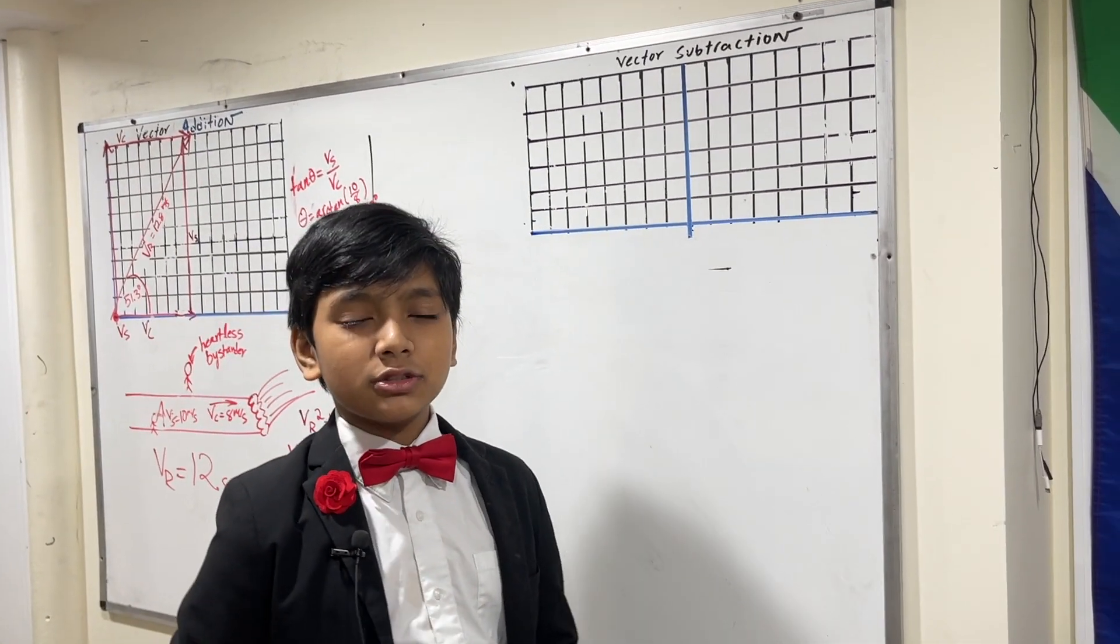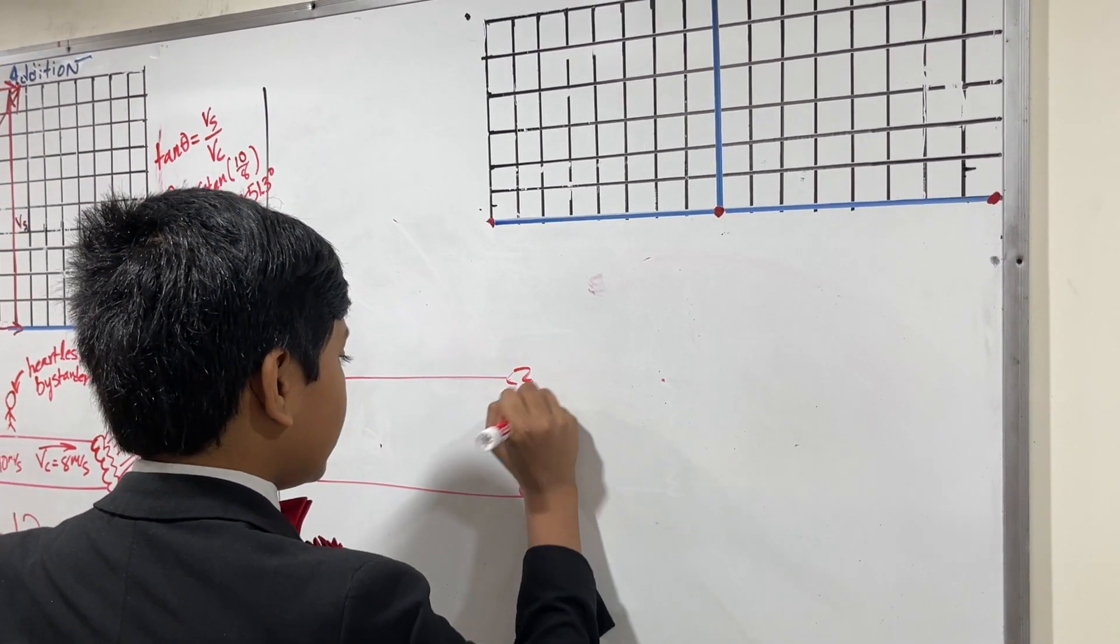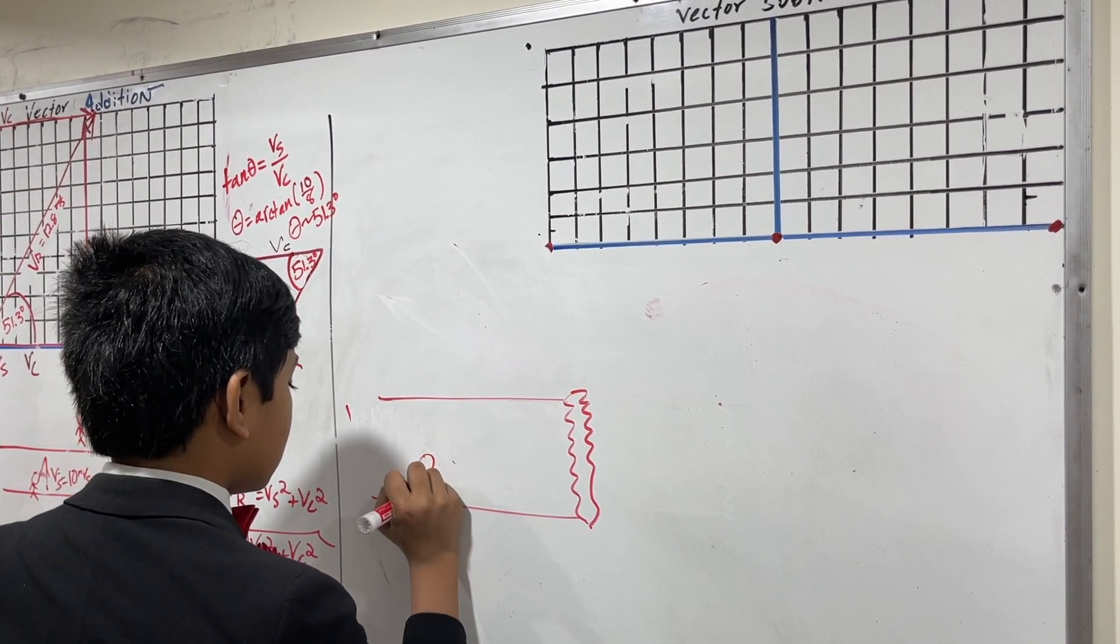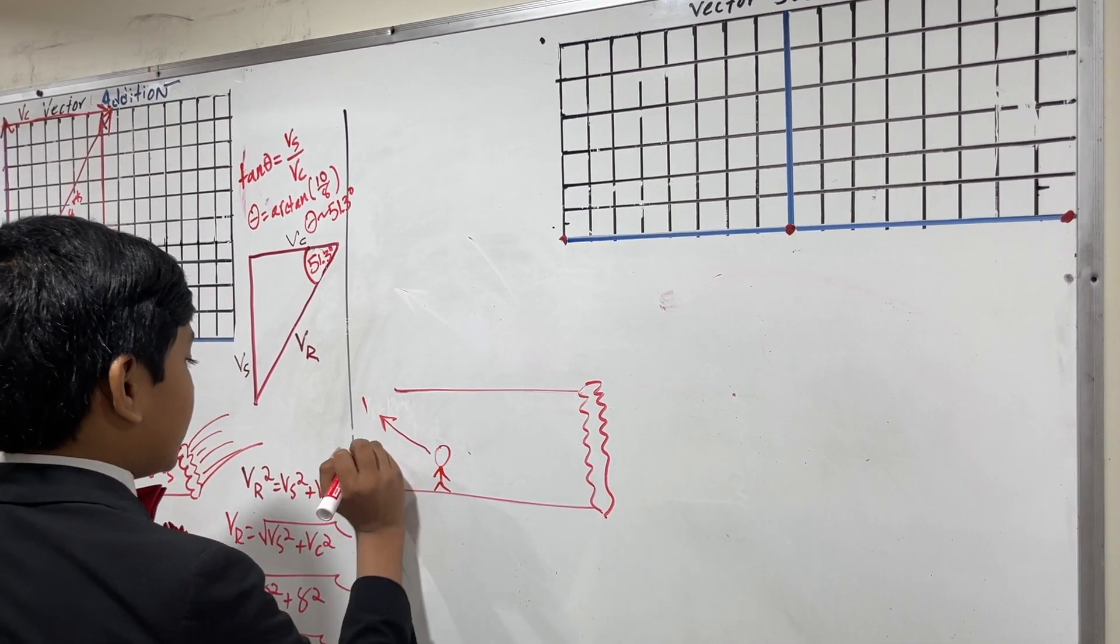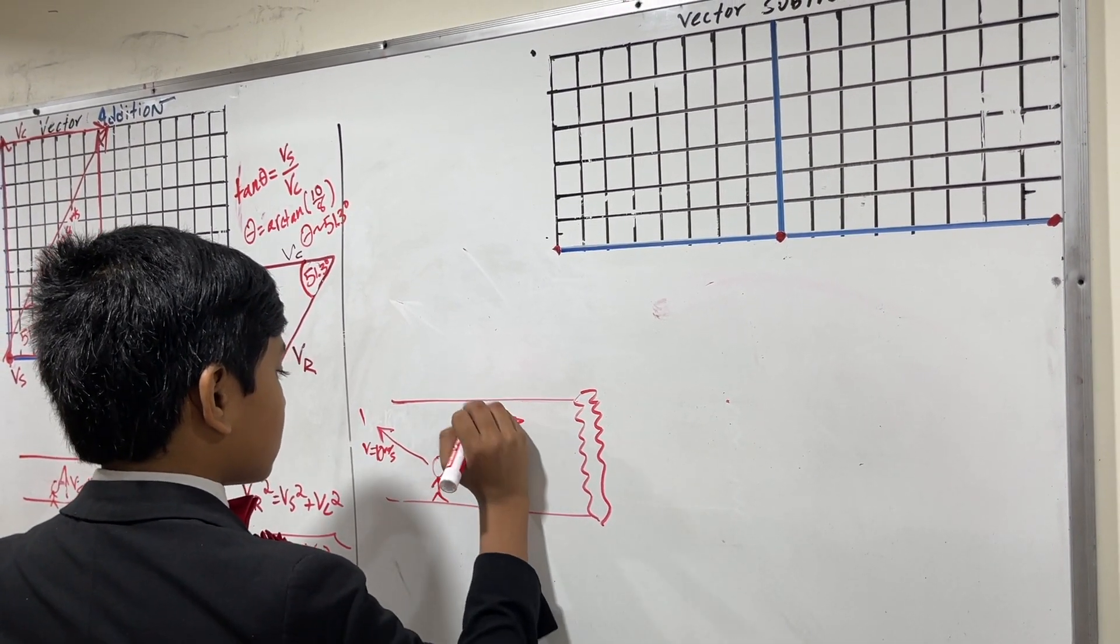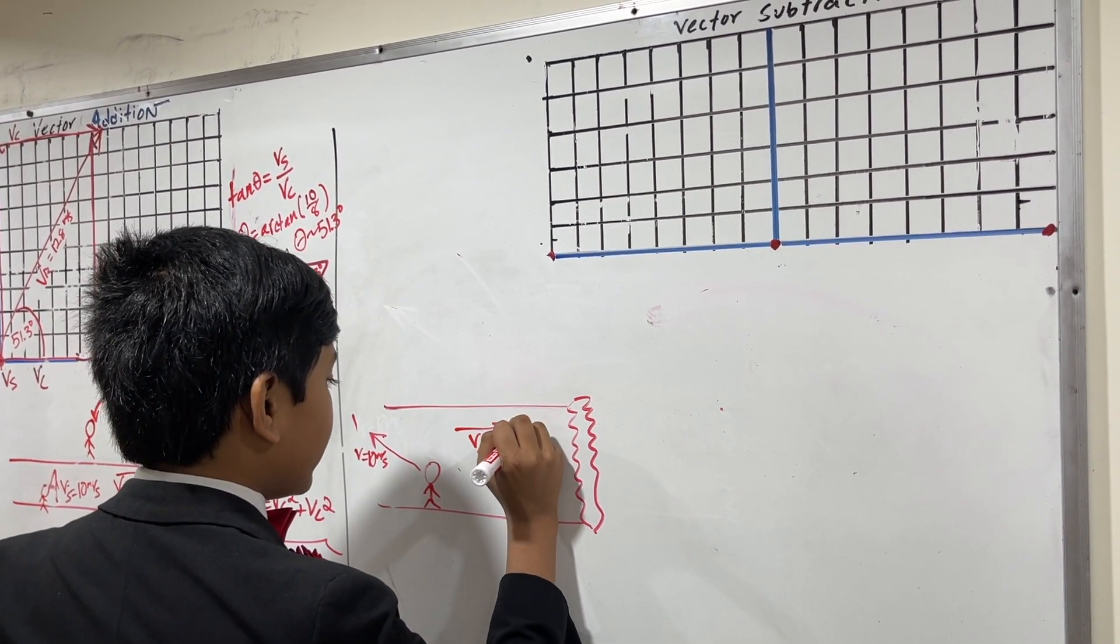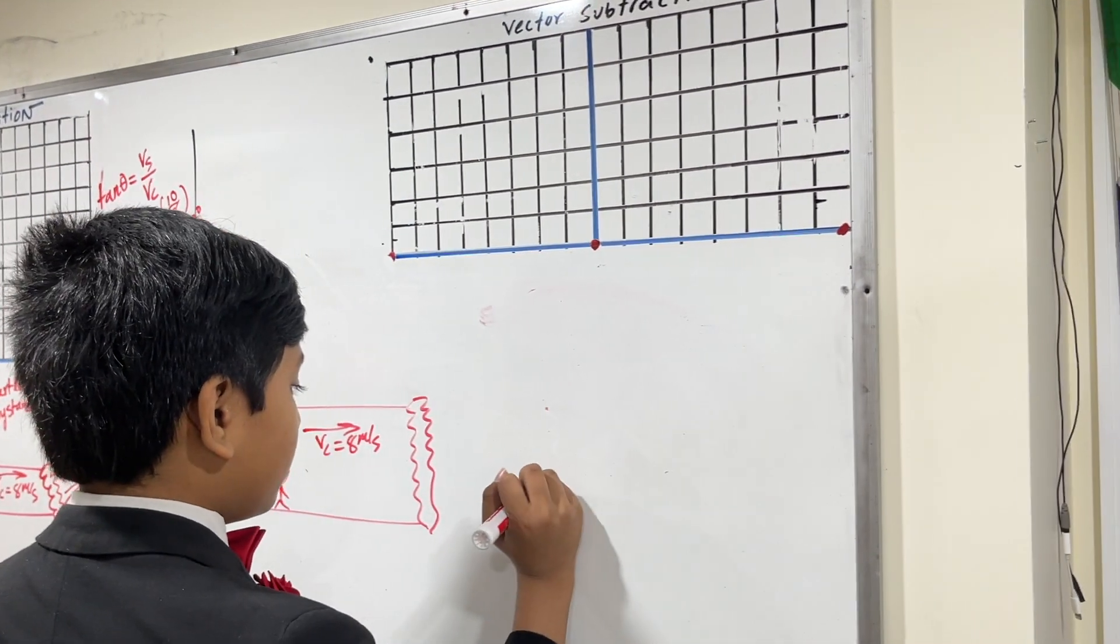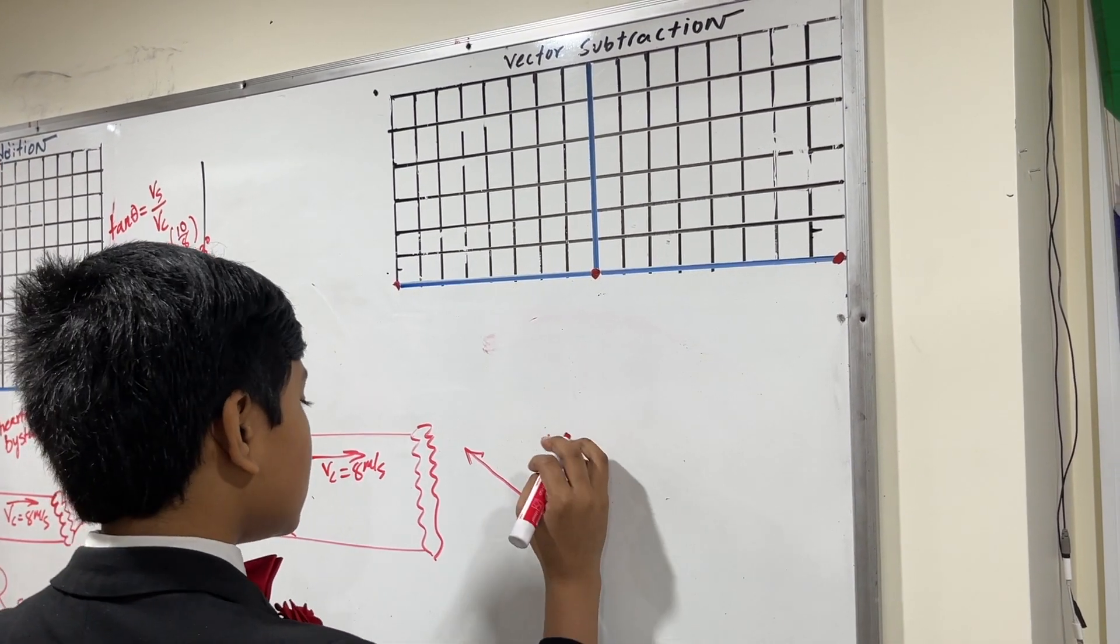All right. So, now, let's do some vector subtracts. All right. So, now, Saborno decides to, instead of swimming directly towards the other shore, to put his velocity of 10 meters per second at an angle with the hope that the X component of his velocity will cancel out with V current, which is going 8 meters per second this way. So, what we're trying to do here is subtract vectors and find his total Y velocity that he will use to get across.